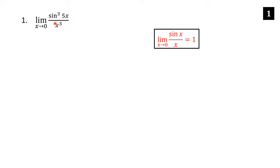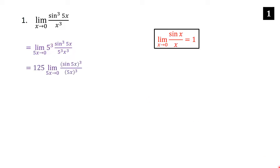Notice that we have a 5x in the numerator but we're missing the 5 in the denominator. Because everything's cubed, we want a 5 cubed down there. So I'm going to put 5 cubed in the denominator and multiply by 5 cubed as well to undo that — we'll write it next to the fraction and pull it out in a second.